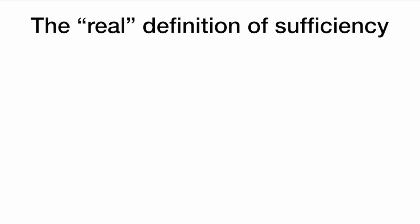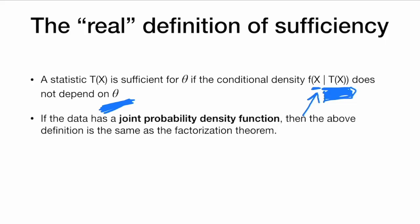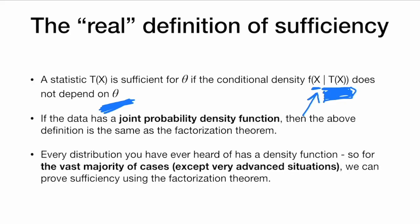Now the factorization theorem is the way we usually prove sufficiency, but often the definition of sufficiency is introduced in another way. We say that a statistic t(x) is sufficient for theta if the conditional density of the data given our statistic does not depend on theta. This makes intuitive sense: if I know t(x), then that basically tells me about theta, meaning my distribution of the data doesn't depend on theta anymore because I already know everything through the statistic. If the data has a joint probability density function, then this definition is equivalent to the factorization theorem. Every distribution we've ever heard of has a density function, so for the vast majority of cases we can just prove sufficiency using the factorization theorem.